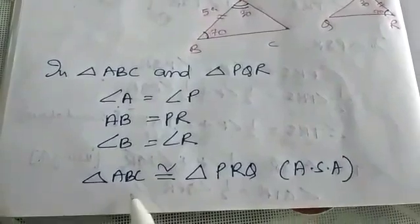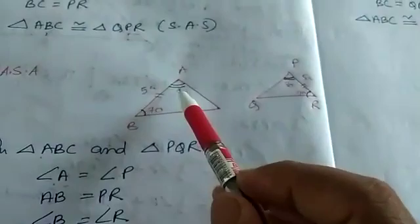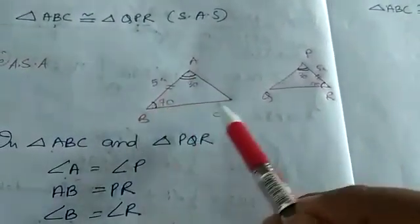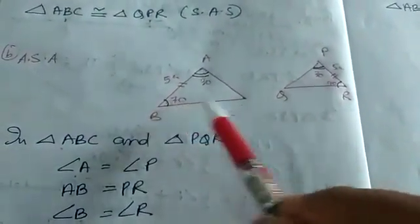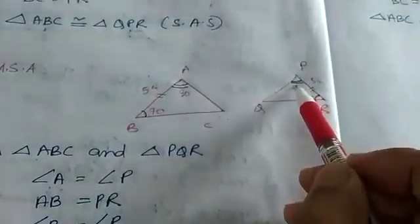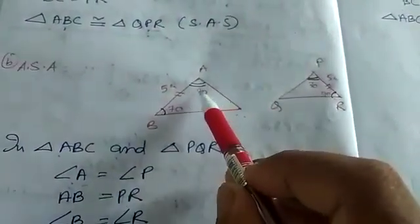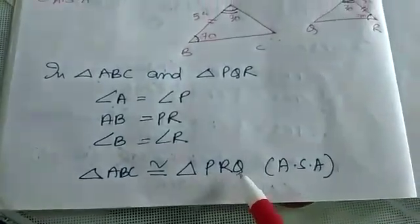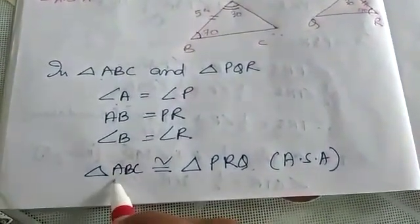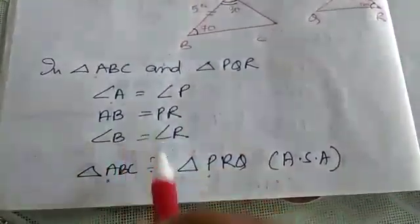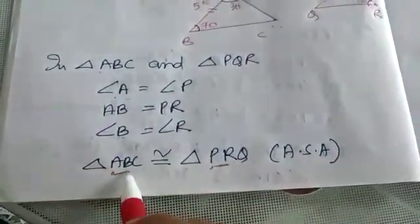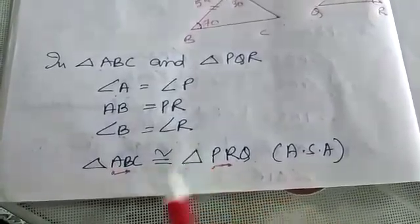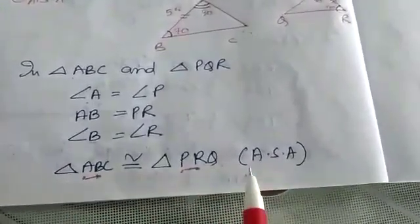By Angle-Side-Angle, triangle ABC is congruent to triangle PRQ. Starting with A (30 degrees), B (70 degrees), C — and matching to P, R, Q. B is in the center and R is in the center. So the triangles are congruent by Angle-Side-Angle.